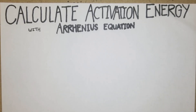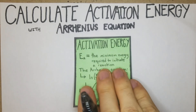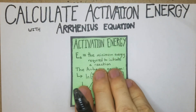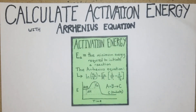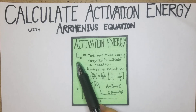In this video we're going to go over how to calculate activation energy using the Arrhenius equation. Activation energy is the minimum amount of energy that's required to initiate a certain reaction, and that's abbreviated Ea.